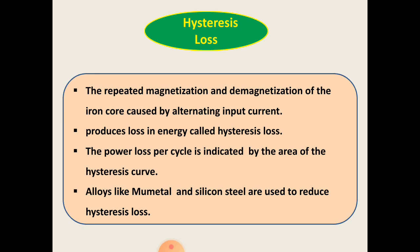This loss can be minimized by using a magnetic material such as silicon steel or mu metal. Mu metal is a ferromagnetic alloy containing 78% nickel, 17% iron, and 5% copper. This mu metal has high permeability and low hysteresis loss.